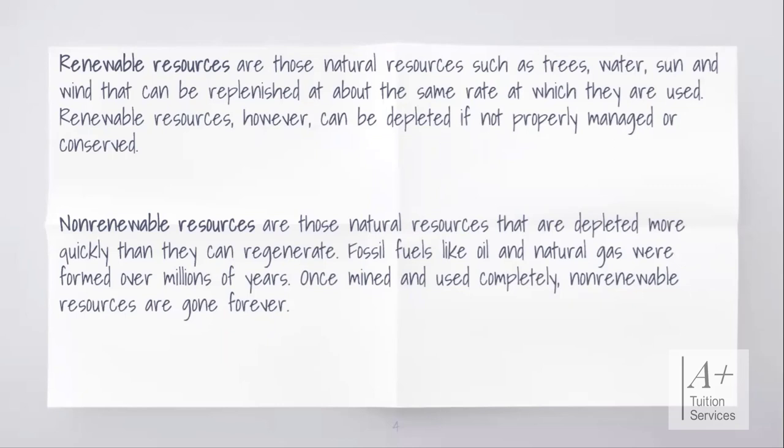For example, trees are a renewable resource, but if we cut down trees and don't plant them back, we can lead to their depletion. Water is a renewable resource — we have the water cycle taking up water through evaporation, condensing it, and bringing it down in the form of precipitation, which can be hail, snow, or rain. But when humans pollute the water through agricultural, industrial, or recreational means, we can lead to a depletion of water.